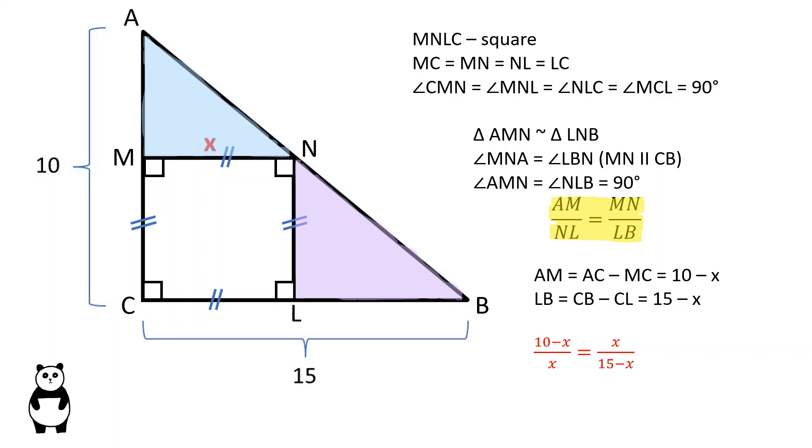Therefore, 10 minus X over X is equal to X over 15 minus X. And after expanding and simplifying the equation, we are left with X is equal to 6.